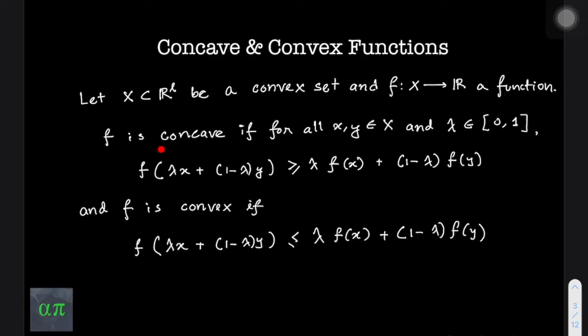The function f is a concave function if for all x and y elements of x, and lambda element of the closed interval [0,1], the function f evaluated at a linear combination of x and y is greater than or equal to the linear combination of f evaluated at x and f evaluated at y. Conversely, the function f is convex if f evaluated at the linear combination is less than or equal to the linear combination of the function's evaluations at x and y.